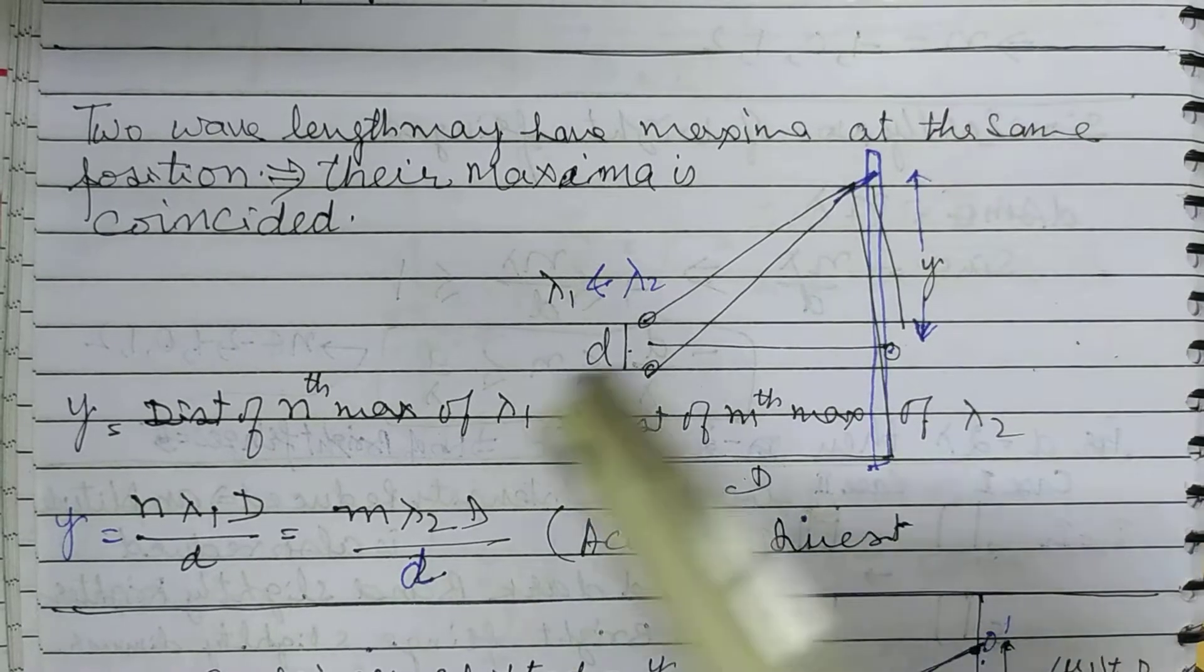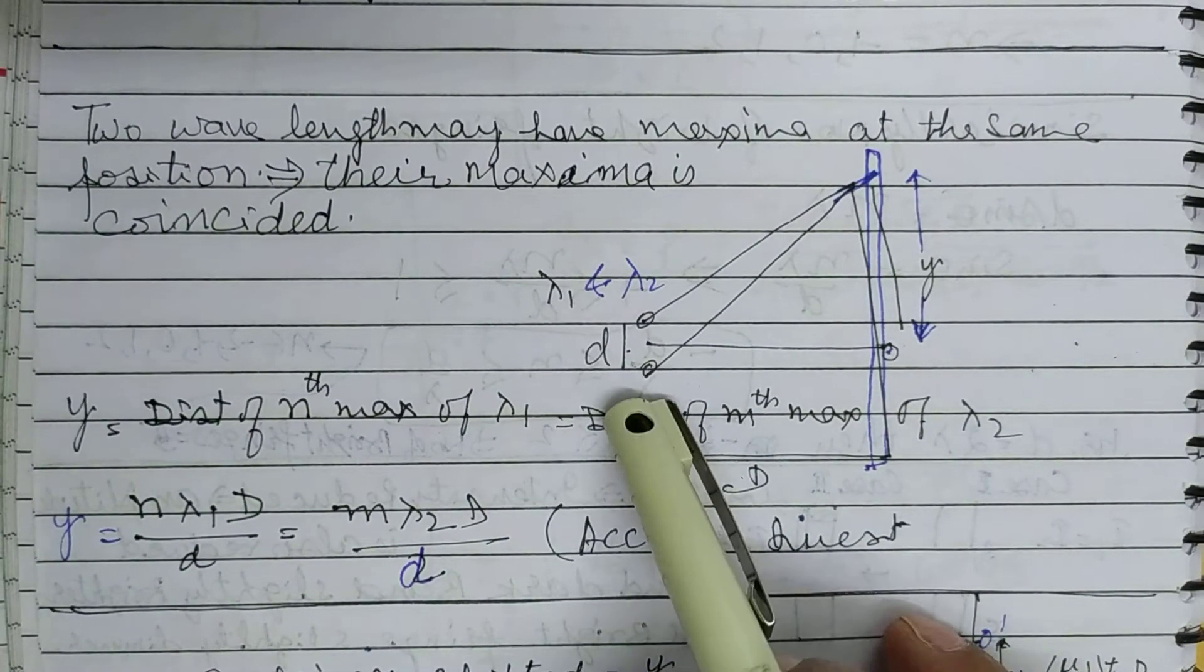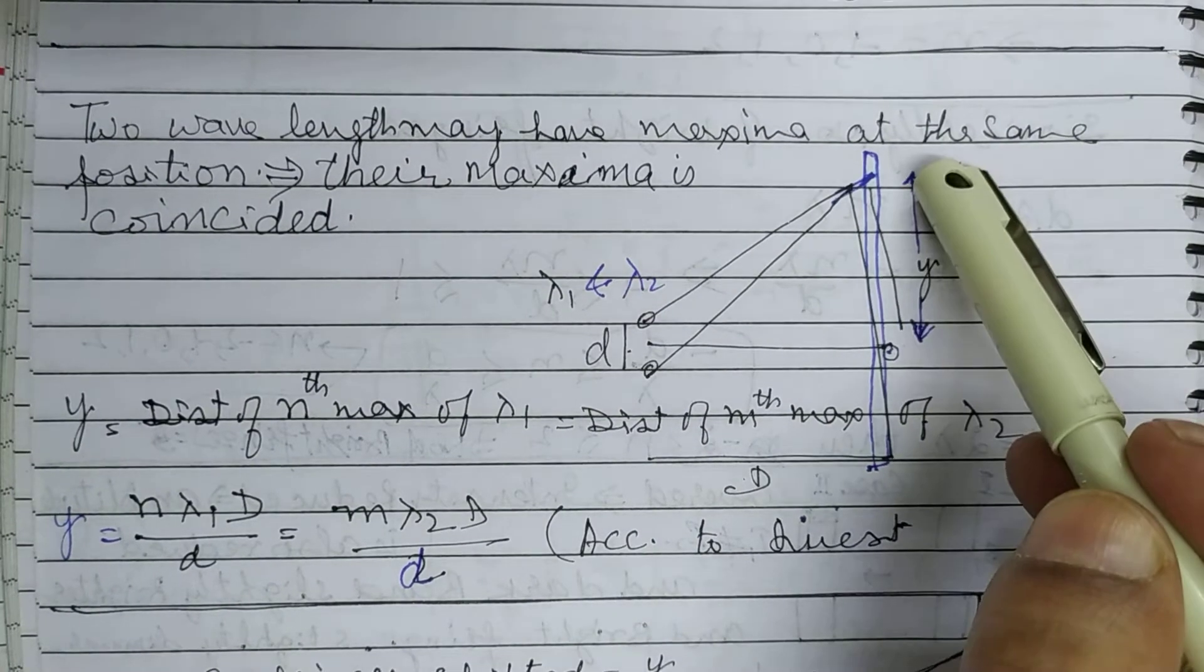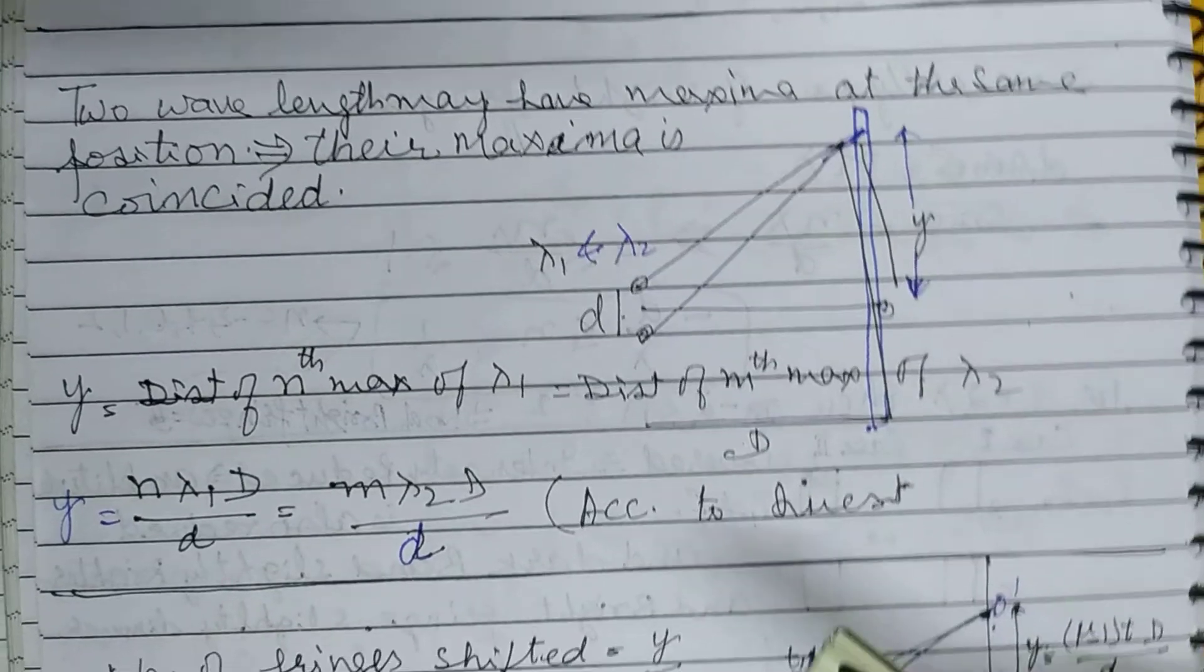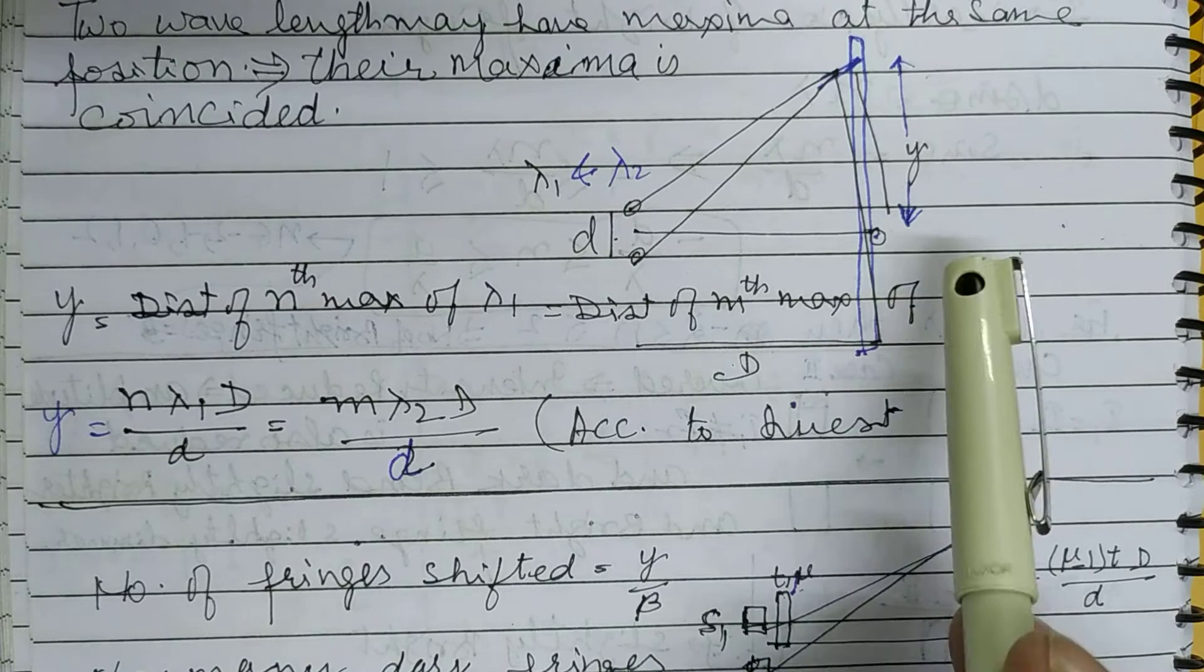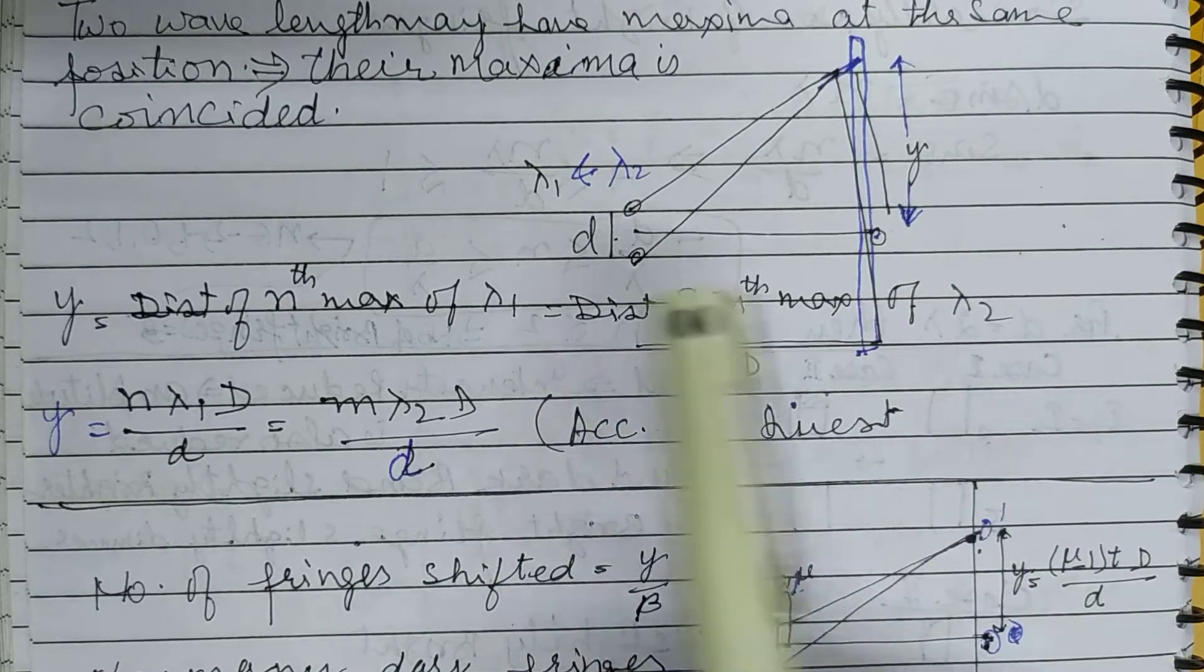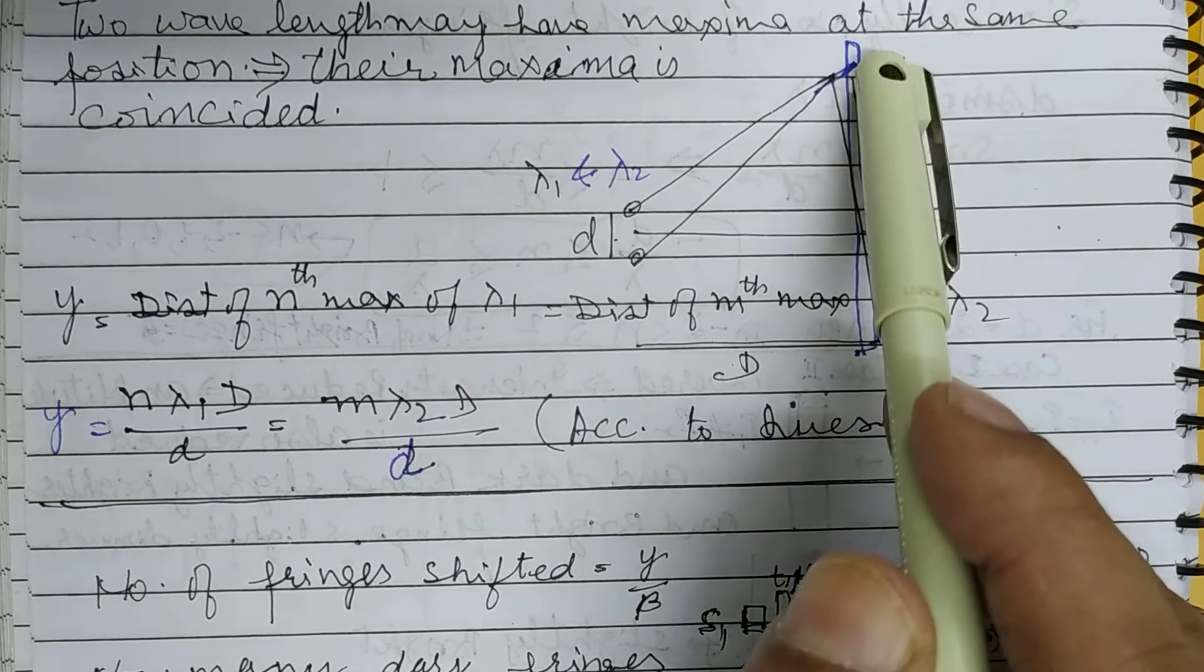When you use wavelength lambda 1, that is the nth bright fringe. When you use the second wavelength, that is the mth bright fringe. For both, it's the same position. So the principle is you use this equation: the distance of the nth bright fringe and distance of the mth bright fringe from the center.